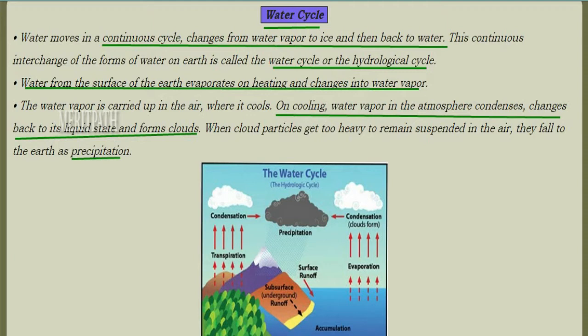Water from the surface of the earth evaporates on heating, goes up into the sky, and converts into water vapor. This water vapor gets carried up in the air and cools down. When it cools down, it condenses, changes back into the liquid state, and forms clouds. When these clouds become heavy, they come down to the surface of the earth as precipitation or rainfall.